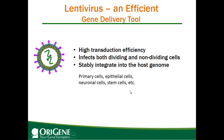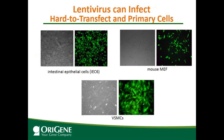The cells listed here — primary cells, epithelial cells, neuronal cells, and stem cells — are known to be difficult to deliver genes to by traditional chemical media transfection. Therefore, scientists have engineered lentiviral vectors to deliver genes into those cells.